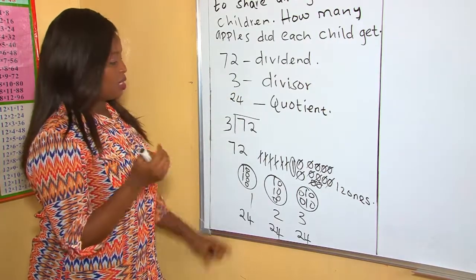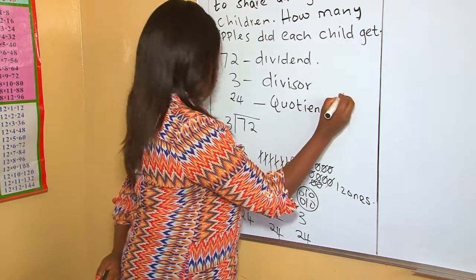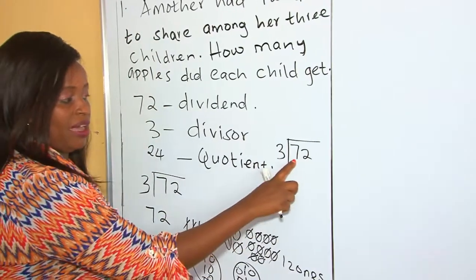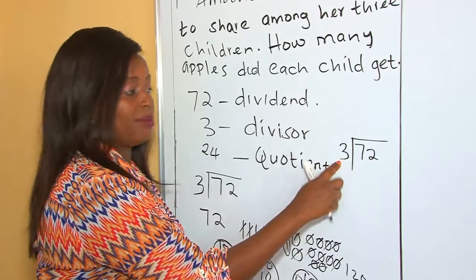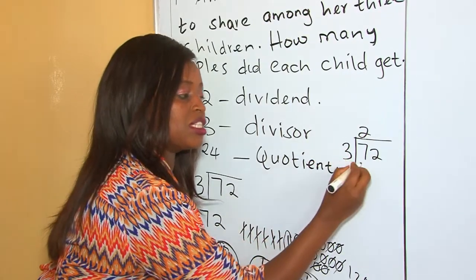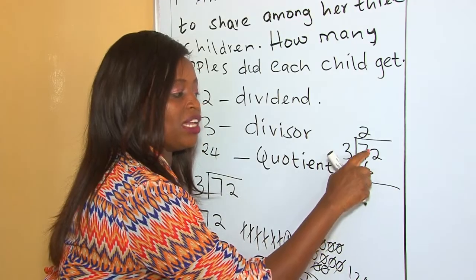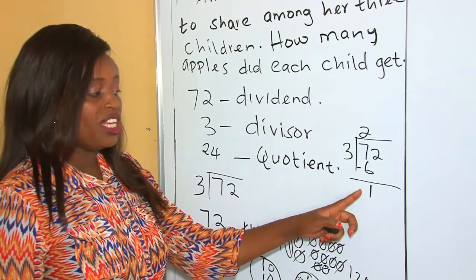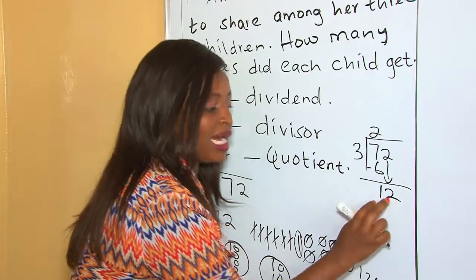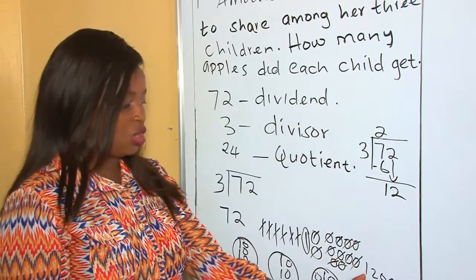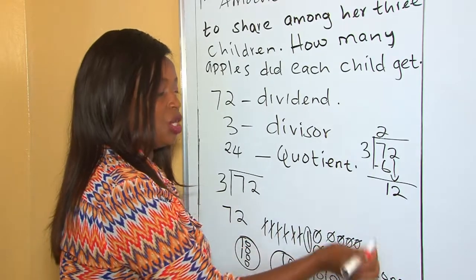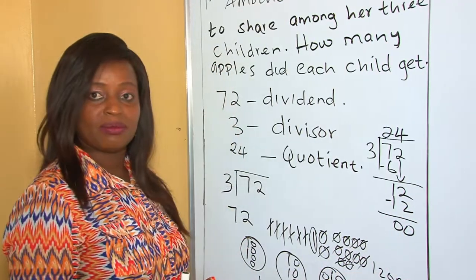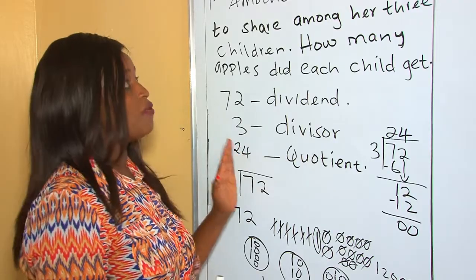In other words, you can also work it out this way. You are given 72 divided by 3. Seven divided by 3 it goes how many times? Two. Then you say 2 times 3 is 6. When you take away 7 minus 6, you get 1. This is the one ten. So this one ten, we drop the ones there, they become twelve ones. So twelve ones divided by 3 you get 4. And there's no remainder. Remember this kind of division is called division without a reminder with regrouping.